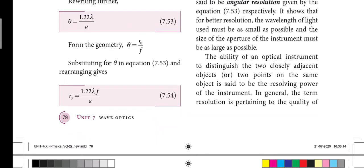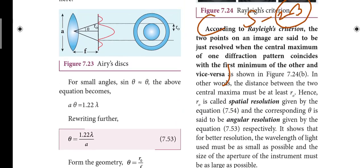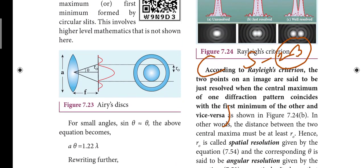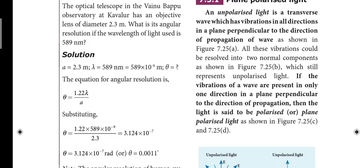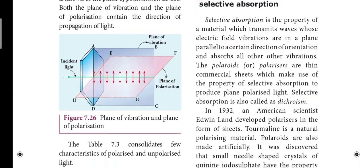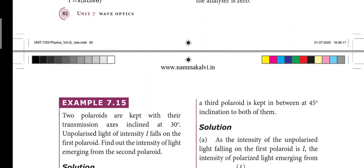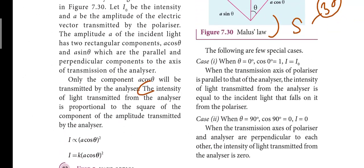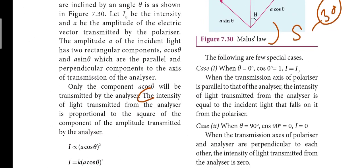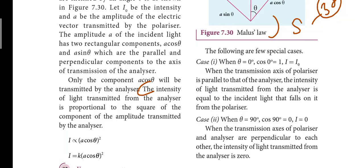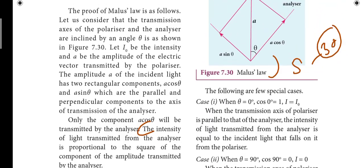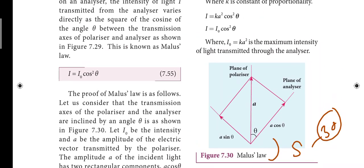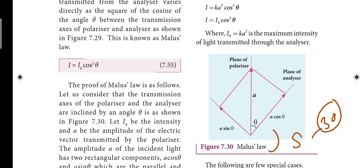Next, page number 78: according to Rayleigh criterion — and the black bold letters. That is the twenty-third short answer. Next, page number 82 — the intensity left side. Diagram. So that is the thirtieth short answer.